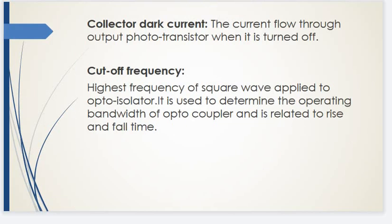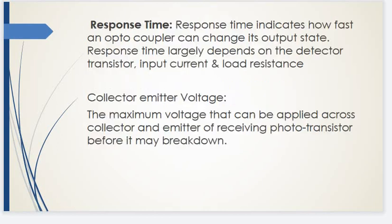Collector dark current is the current that flows through the output phototransistor when it is turned off. Cutoff frequency is the highest frequency of the square wave applied to the optoisolator; it determines the operating bandwidth of the optocoupler and is related to rise and fall time. Response time indicates how fast an optocoupler can change its output state with respect to the input, and largely depends on the detector transistor, input current, and load resistance.